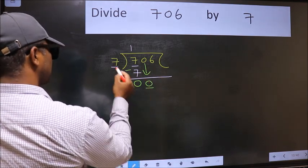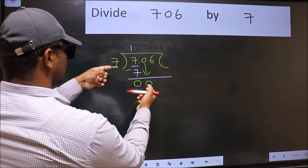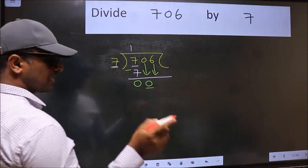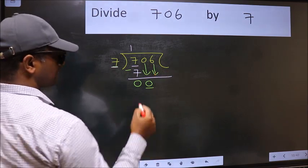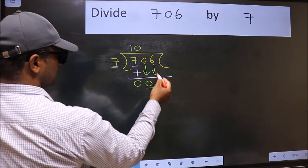Now here we have 0 and here 7. 0 is smaller than 7. So we should bring down the second number. And the rule to bring down the second number is we should put 0 here. Then only we can bring this number down.